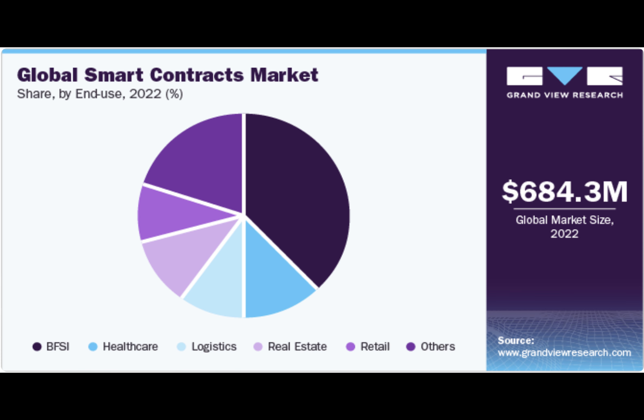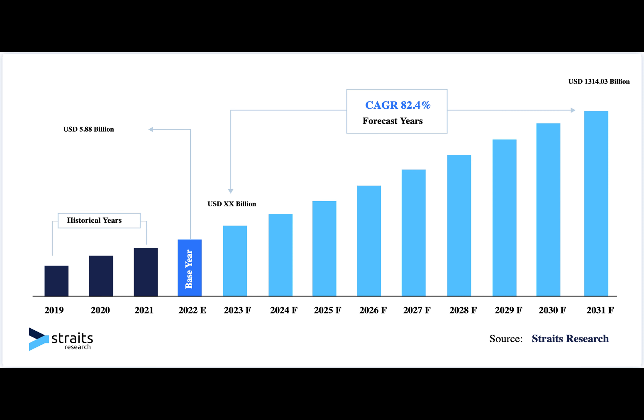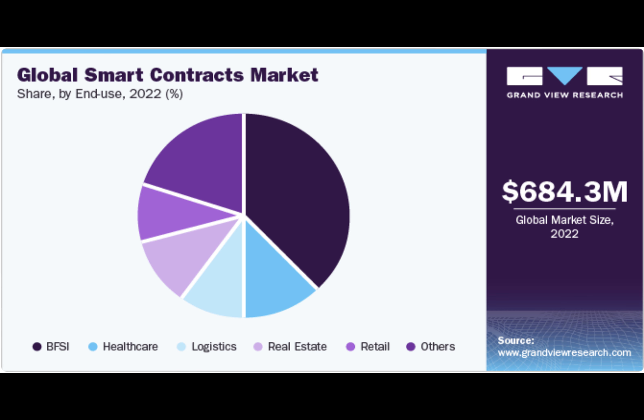Application-specific blockchains differ from smart contracts, which are self-executing codes written on general-purpose blockchains. Smart contracts automate and enforce agreements between parties without changing the blockchain's attributes. Smart contract audit processes are critical for reviewing code to detect and correct security flaws. According to Grand View Research, the global smart contracts market will grow from $684.3 million in 2022 to $73,773.0 million, at an 82.2% CAGR, paving the way for future scalability in blockchain technology.